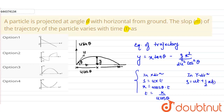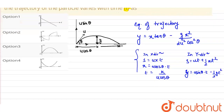In the y-direction, apply s = ut + ½at². Here s = y, u in the vertical direction is u·sinθ, so y = u·sinθ·t − ½g·t². Substituting the value of t from the x-direction into this equation, we get the equation of trajectory: y = x·tanθ − gx²/(2u²cos²θ).